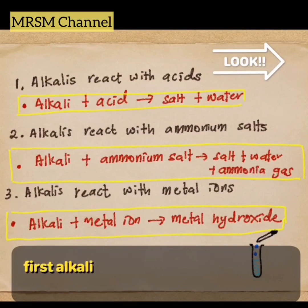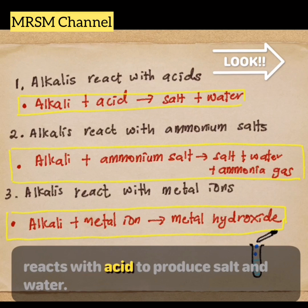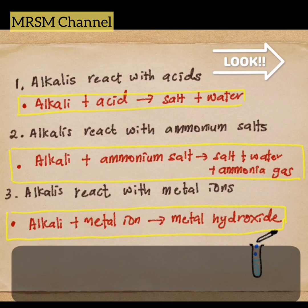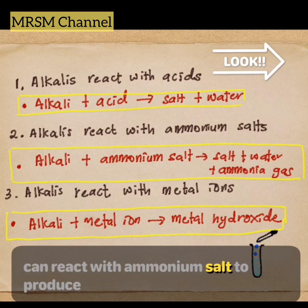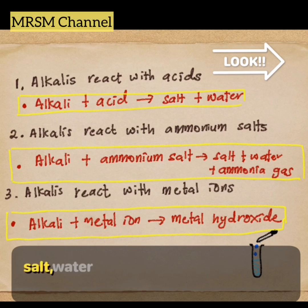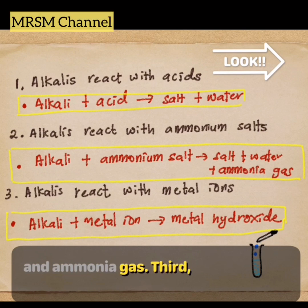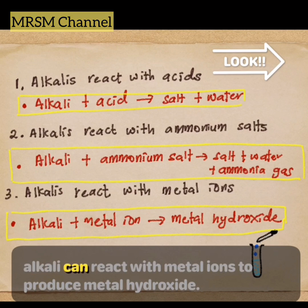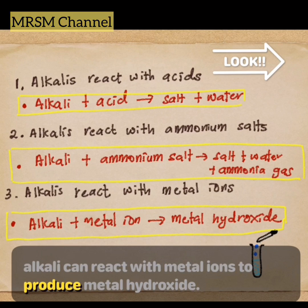First, alkali reacts with acid to produce salt and water. Second, alkali can react with ammonium salt to produce salt, water, and ammonia gas. Third, alkali can react with metal ion to produce metal hydroxide.